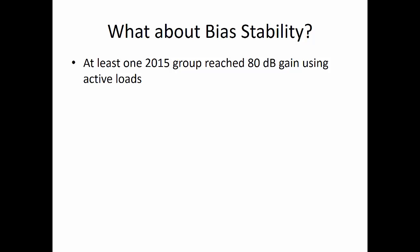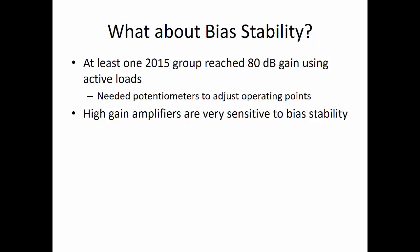Another concern is bias stability. In previous years, a lot of groups managed to go above 60 decibels of gain. At least one 2015 group reached 80 decibels gain using active loads. However, they needed potentiometers to adjust their operating points. High-gain amplifiers are very sensitive to bias stability. Keep in mind, a gain of 80 decibels implies that their gain stage had a gain of roughly 54 decibels or so, so close to 500 volts per volt.